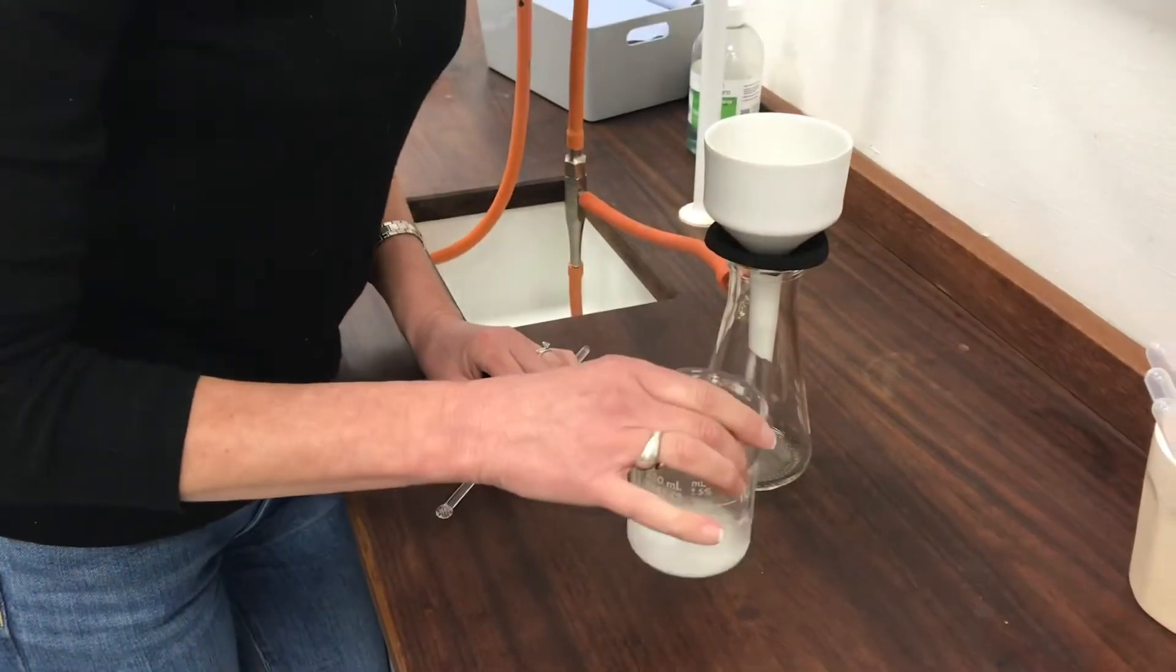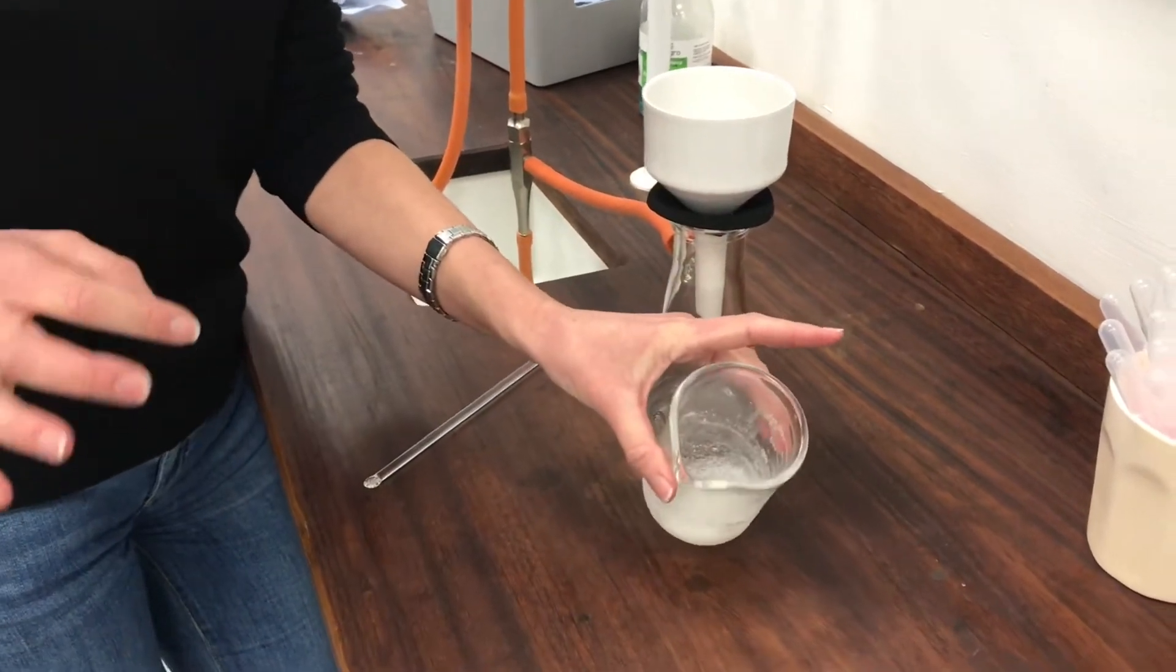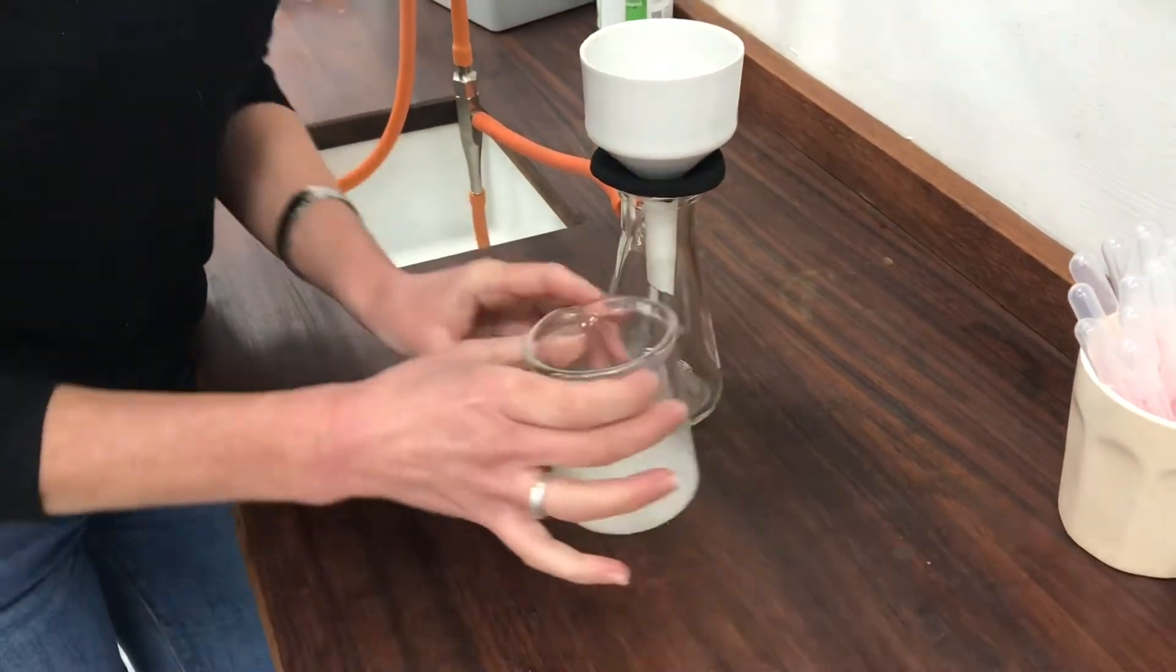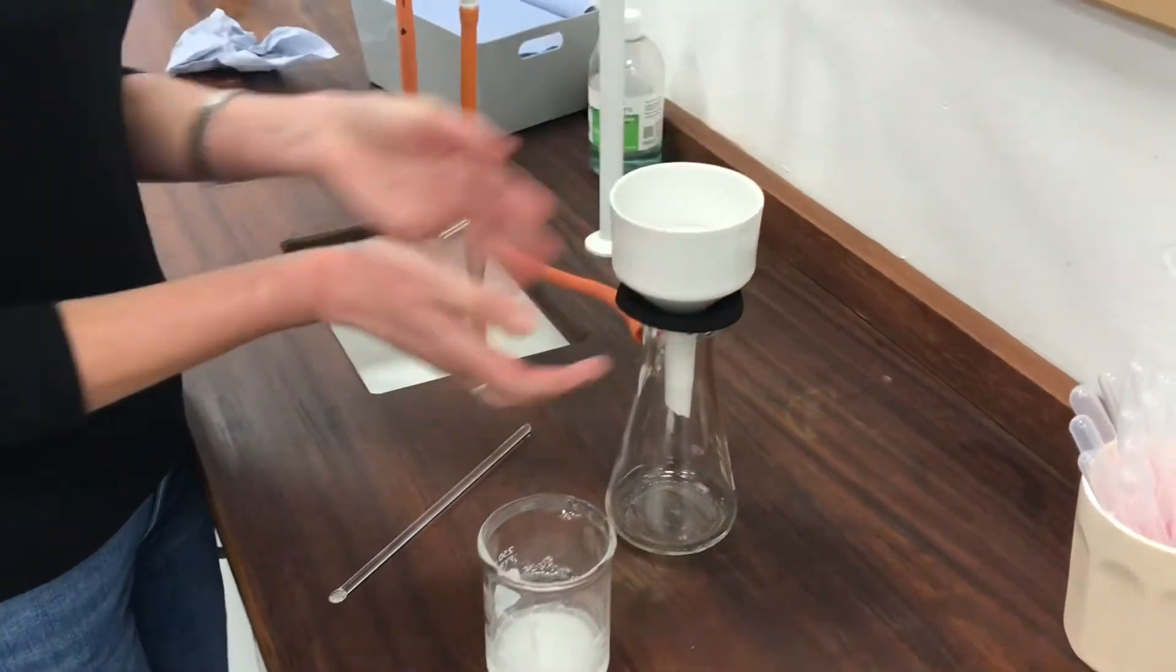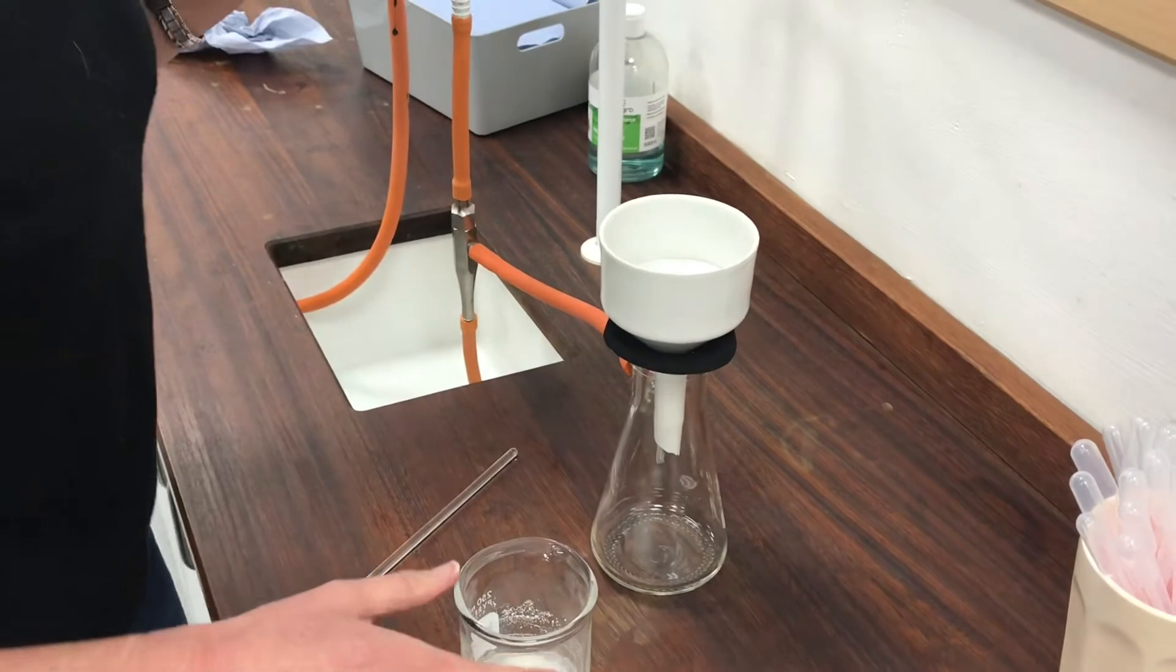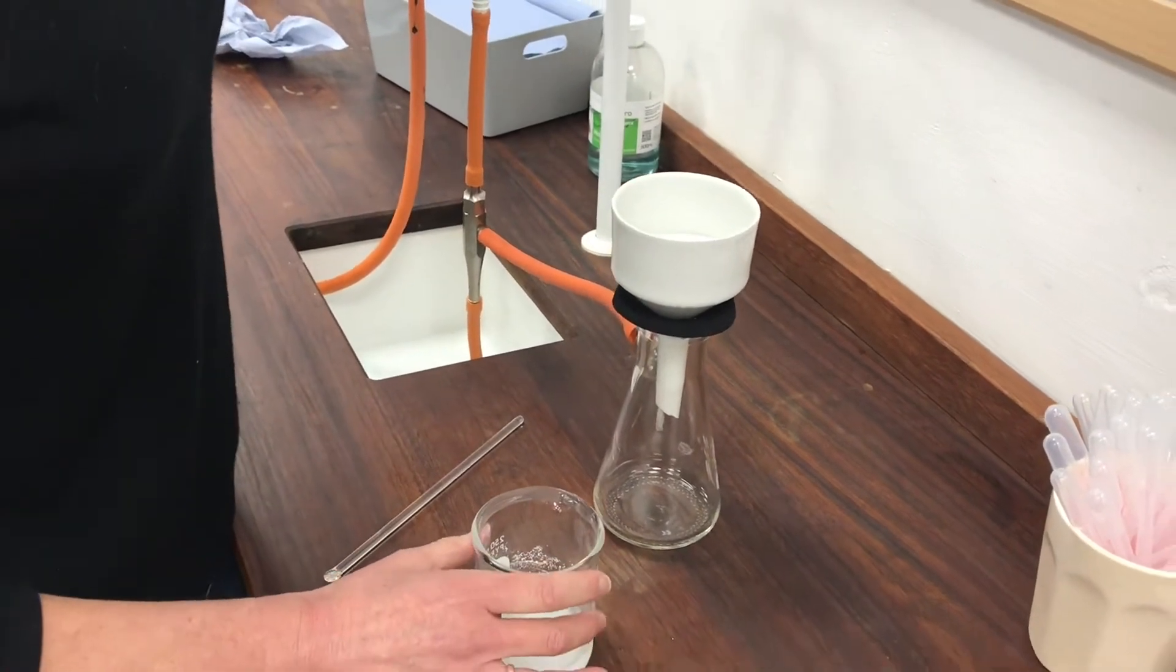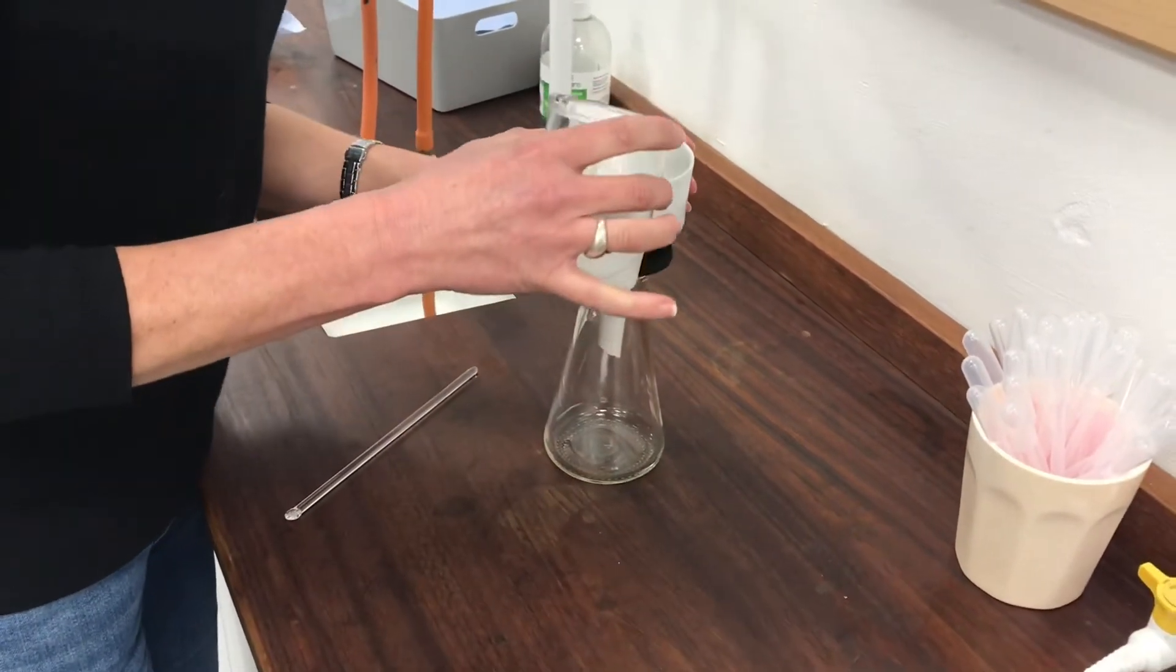So my ice has melted now, my crushed ice, and I've got all my solid product in there. So my first job is to filter this. And I'm going to filter it under reduced pressure. So that means using a Buchner funnel and the suction pump. So I'll turn the suction pump on and filter to extract my product.